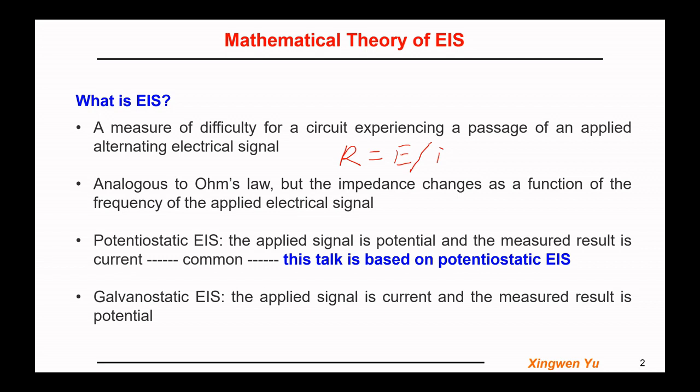Generally, there are two types of EIS experiments. The first one we can name as the potentiostatic EIS. The applied signal is a potential and the measured result is current. This type of EIS is the most common case and generally used. This lecture will be based on the potentiostatic EIS.